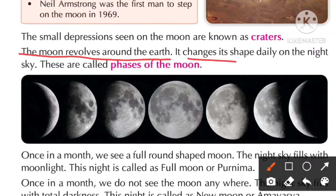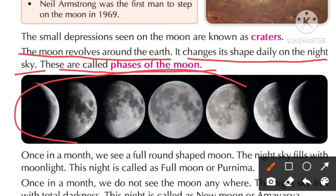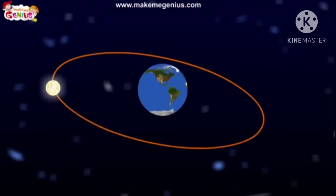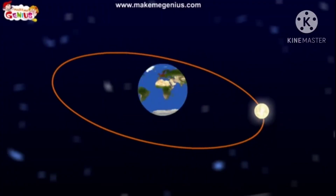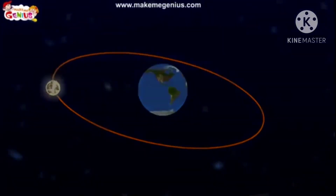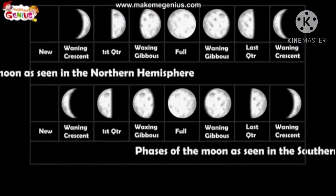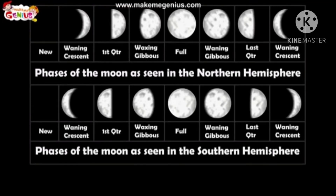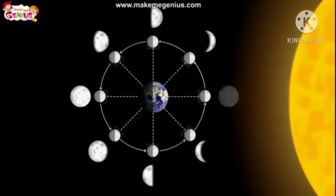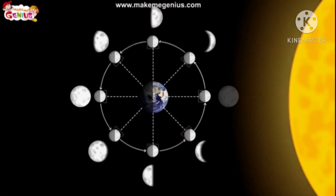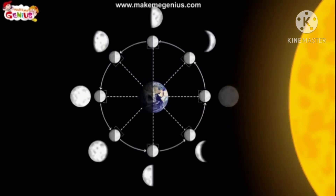The moon changes its shape daily in the night sky. These are called the phases of the moon. The moon keeps on changing its shape because of its revolution around the earth. The moon shines because it reflects the light from the sun. The part of the moon facing the sun is always lit up, and the part facing away from the sun is in darkness — like a torchlight falling on one side of a soccer ball.